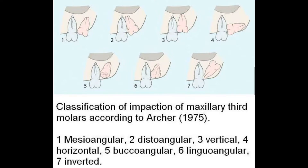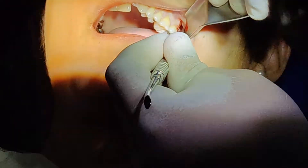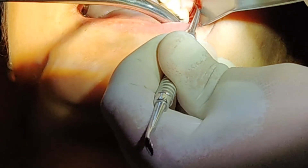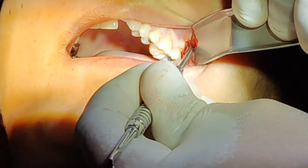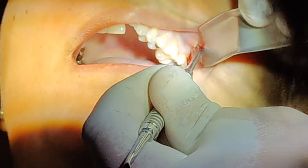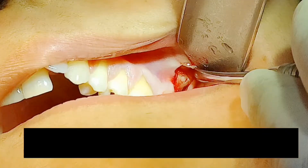This is the case of the day, treated by raising a three-cornered flap. As you can see on the X-ray, it is a distoangular third molar impaction. After anesthetizing with lignocaine and adrenaline, we take a three-cornered flap, going subperiosteally touching the bone, thus exposing a tiny portion of the crown.